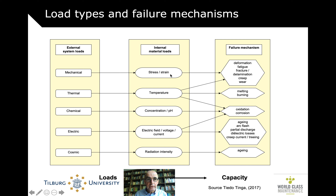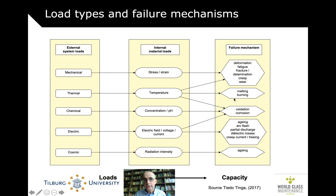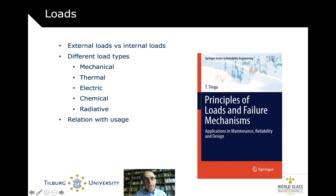Tito Tinga distinguishes five types of external loads, which then lead internally in the asset to different kinds of material loads. Mechanical load leads to stress or strain, which can then lead to deformation, fatigue, or creep. Thermal load, a temperature increase, can lead to melting and burning — that's the failure mechanism. Chemical load leads to an acidic or basic concentration which can speed up oxidation and corrosion. Then there is electrical and cosmic. This is wonderfully written up in Tinga's book, Principles of Loads and Failure Mechanisms, which I think is the definitive text on the physics of loads and failure mechanisms.